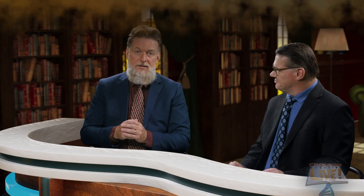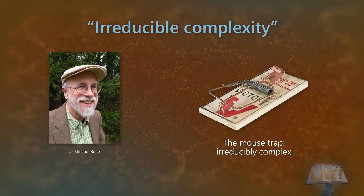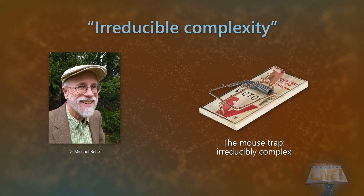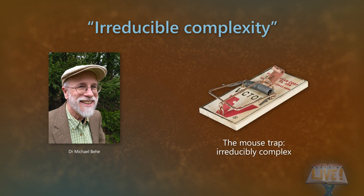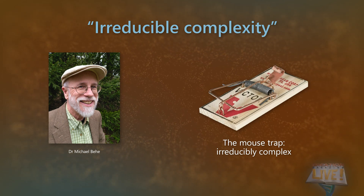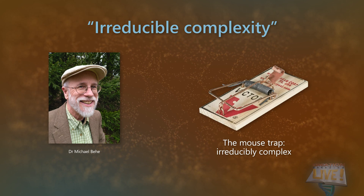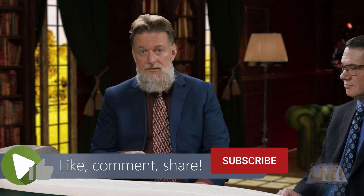For example, biochemist Michael Behe coined the term irreducible complexity. That refers to a system of interacting parts in which every part has to be in place before it can function. This means that a system couldn't come into being gradually bit by bit, and there are many examples of this kind of evolution-refuting design in molecular biology.